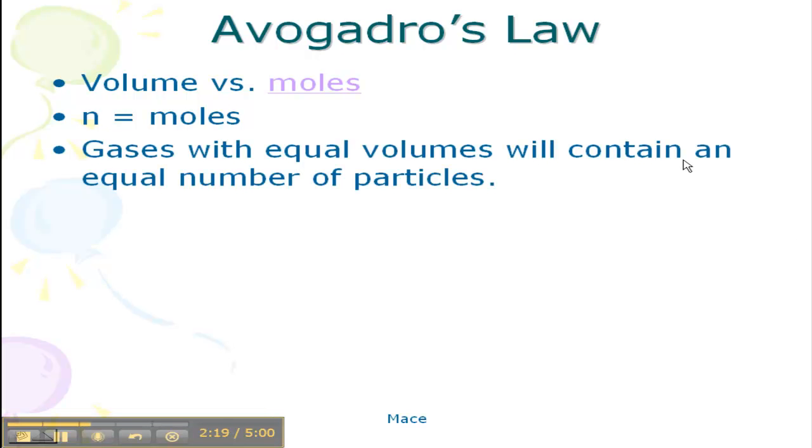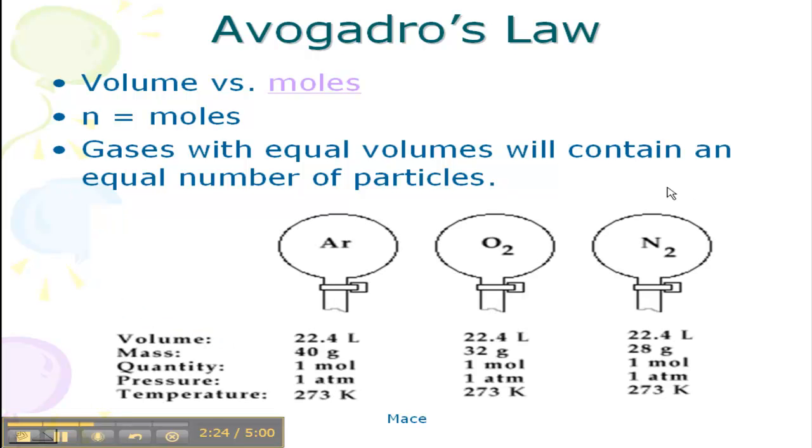Gases that have equal volumes are going to contain an equal number of particles. So in this picture here we have argon, we have oxygen, we have nitrogen. Notice that they all have the same volume, 22.4 liters. They're all 1 mole, they're all 1 atm, and they're all 273 Kelvin. Now notice that their masses are different. These are their molar masses from the periodic table. So remember that the molar mass is going to be different depending on the compound itself.